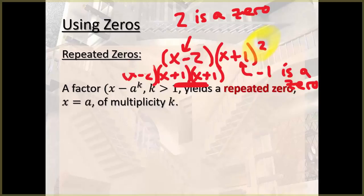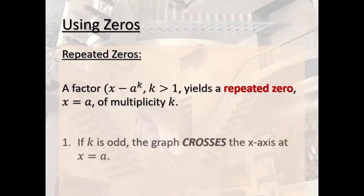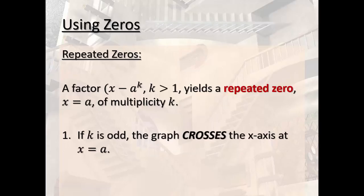In this particular case that I have drawn there, the multiplicity is this number. And that number is going to tell us a couple of things. If that multiplicity is odd, that means that the graph crosses the x-axis at that point a.